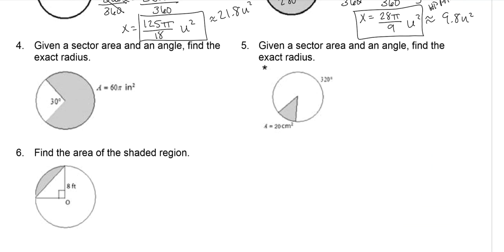Given a sector area and an angle, find the exact radius. So we know that this is the angle, but we need the shaded area. So 360 minus 30, which ends up being 330 degrees. So same process, part over whole, so 330 over 360.